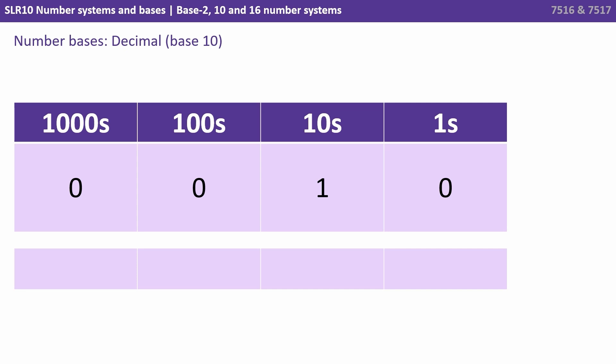As we move to the left we see that the weightings of the columns times us by 10, so the second column is a tens column, then a hundreds, then a thousands.